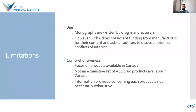Now a couple of limitations of CPS. One is potential for bias — because monographs are written by drug manufacturers, there's potential for some information to be biased. However, these monographs are reviewed by CPHA editors and approved by Health Canada. For CPHA monographs and other content, CPHA does not accept funding from manufacturers and asks all authors to disclose potential conflicts of interest. Another limitation is scope: CPS focuses on products available in Canada and is not exhaustive, so other sources may contain additional information for the safe use of a product.